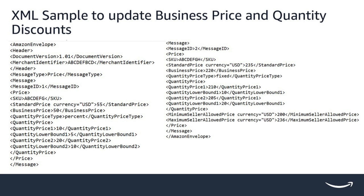This is an XML sample to update business price and quantity discounts. The left section of the sample represents the percent model. You should enter a number between 0 and 99 for the discount to offer. For example, if you want to offer 10% off when 5 items are bought and 20% off when 10 items are bought, enter 10 in quantity price 1 and 20 in quantity price 2, and 5 in quantity lower bound 1 and 10 in quantity lower bound 2.